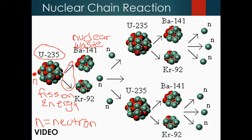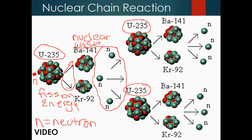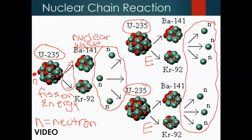Those three neutrons I just circled — the top one goes on to one uranium atom, the bottom one to another uranium atom, producing more energy and not three more but six more neutrons. Approximately six neutrons are created for every strike, and you can see how this gets exponentially larger as we go along, with more and more energy created by each of these strikes.